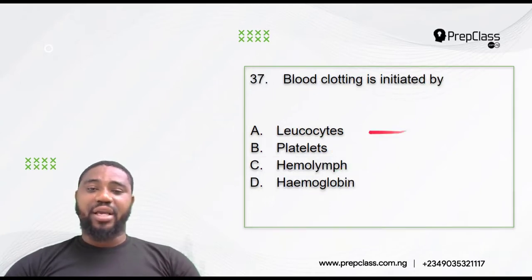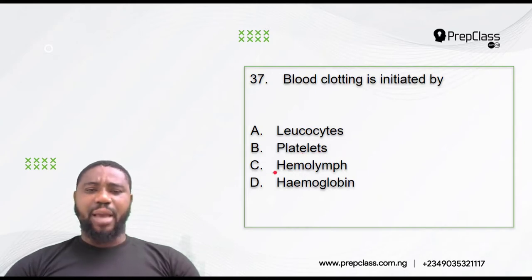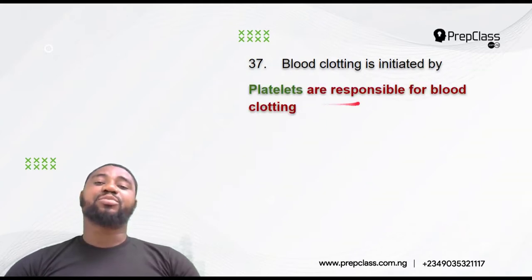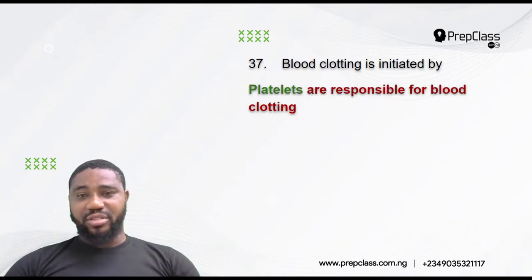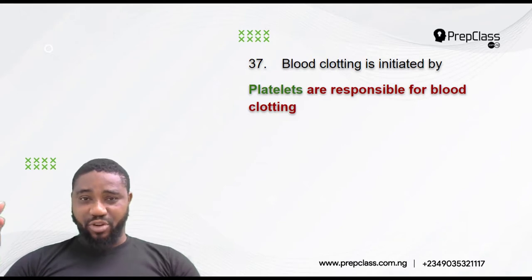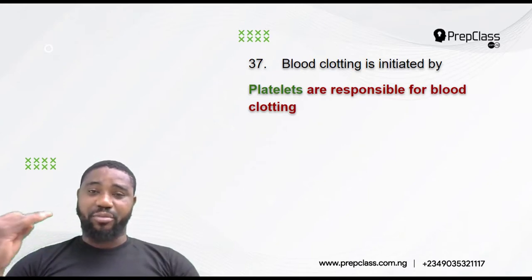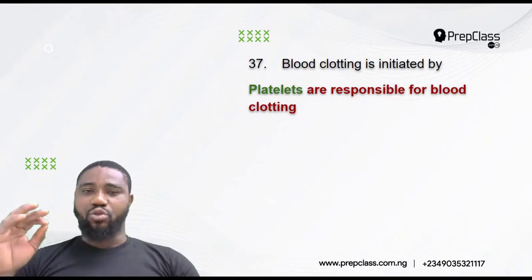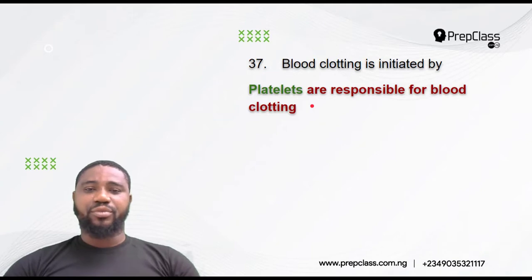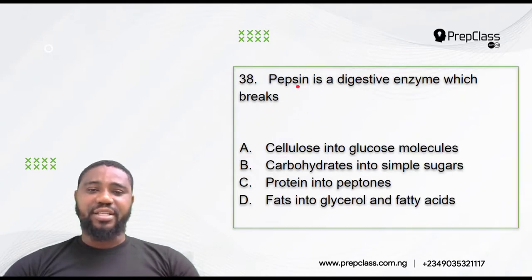Question 37: Blood clotting is initiated by which component — leukocytes, platelets, hemoglobin, or white blood cells? Leukocytes are the white blood cells responsible for defense — they fight invading microorganisms to prevent us from getting sick. Hemoglobin is responsible for transporting oxygen. Platelets are responsible for blood clotting — the ability of your blood to heal a wound. So the correct answer is platelets.